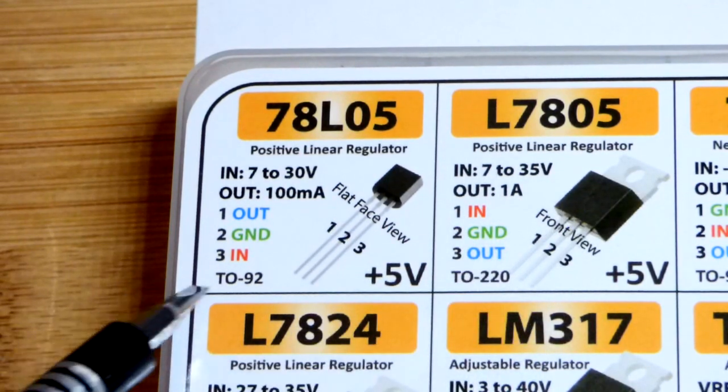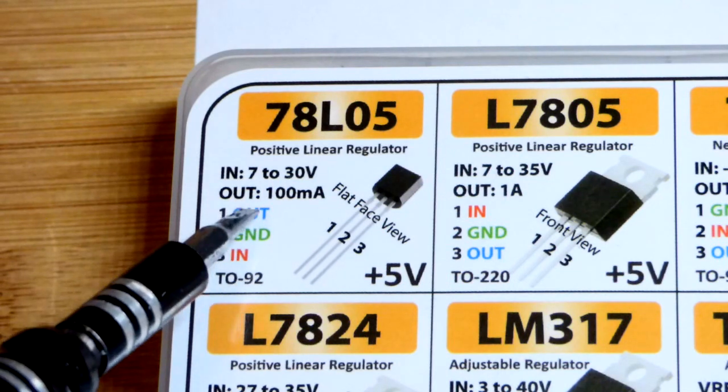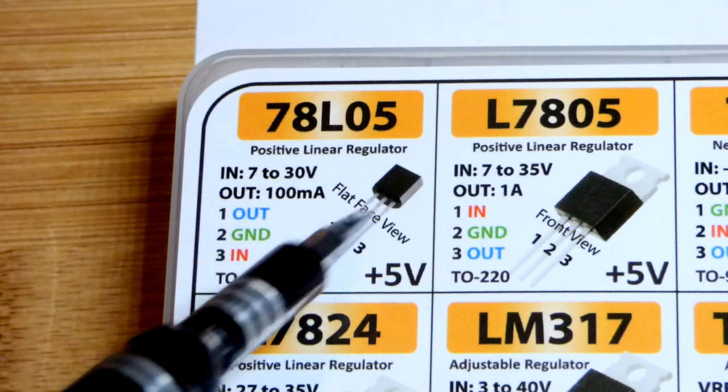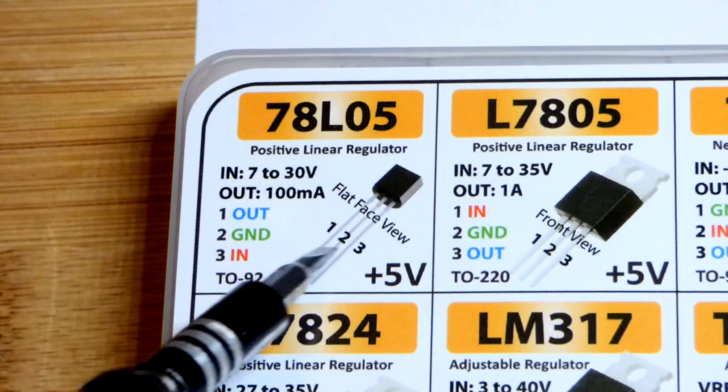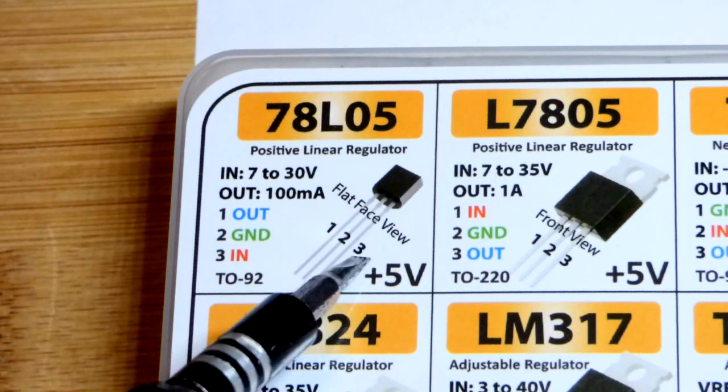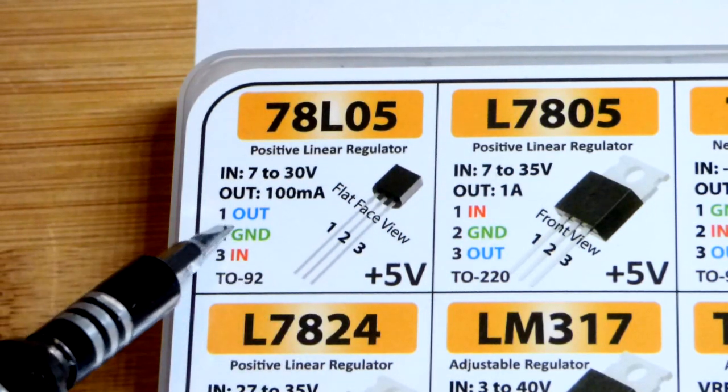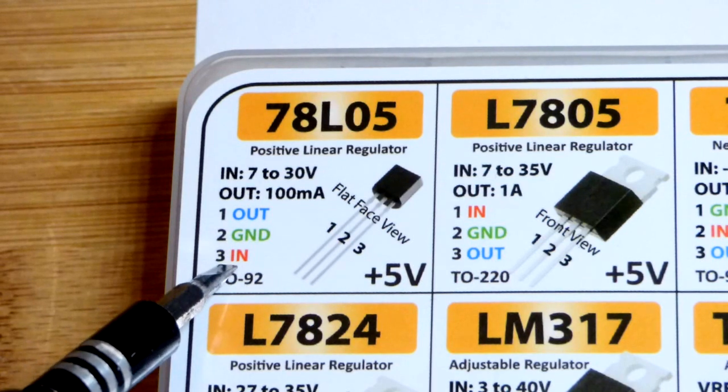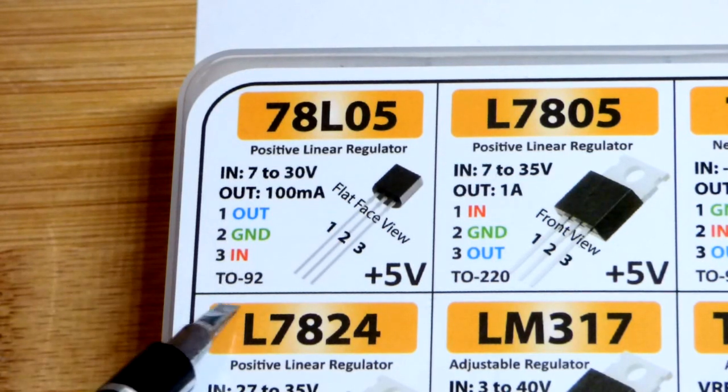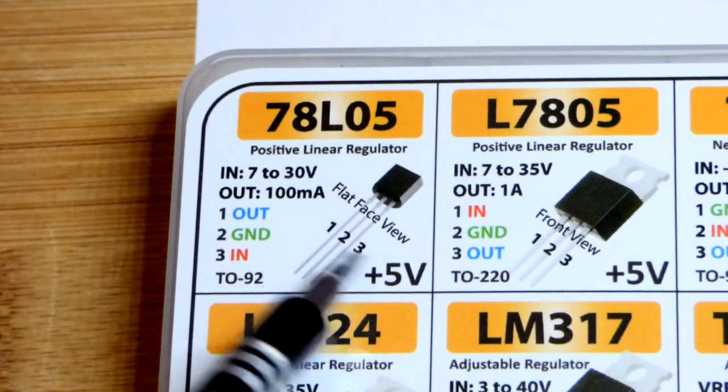But in this case, we have the pin layout right there looking at the flat side. Left pin is 1, middle pin is 2, right pin is 3. So 1 is the output, 2 is ground, and 3 is the input. It is in the TO-92 package.